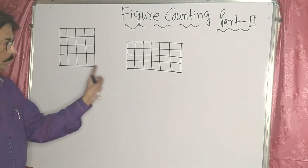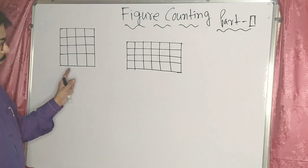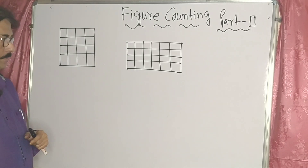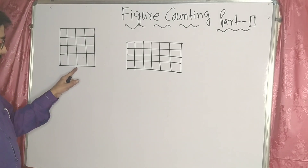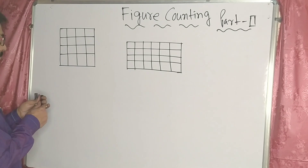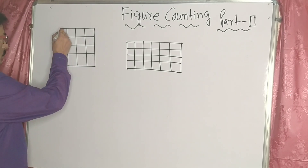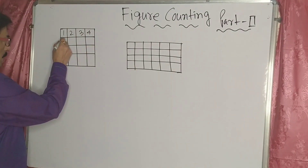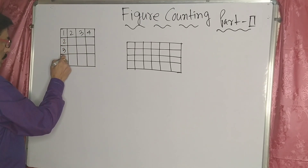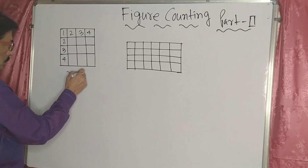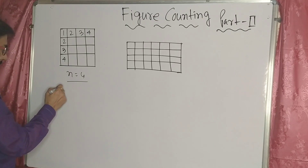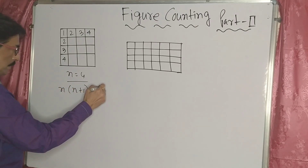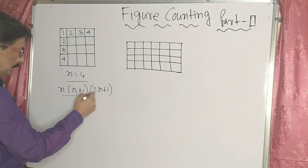Now observe these two figures. For both cases we have to find out the number of squares inside the figure. This is already discussed. Counting the divisions: 1, 2, 3, and 4 — so n equals 4. Now put the values into the formula: n into (n+1) into (2n+1) divided by 6.